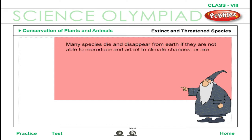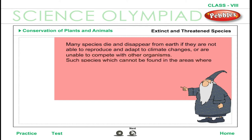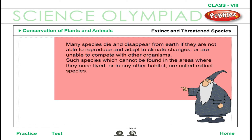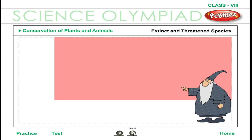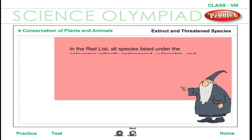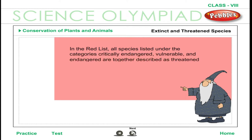Extinct and Threatened Species. Many species die and disappear from Earth if they are not able to reproduce, adapt to climate changes, or compete with other organisms. Such species, which cannot be found where they once lived or in any other habitat, are called extinct species. In the Red List, all species listed under the categories critically endangered, vulnerable, and endangered are together described as threatened species.